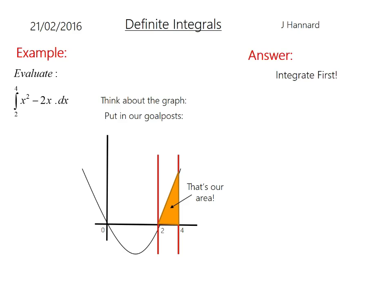So the answer, integrate it first. Add 1 to the power, divide by the new power. So you end up with x cubed over 3 minus 2x squared over 2. But remember that the 2s will cancel and it'll just become a 1. And that's between 4 and 2, remember.